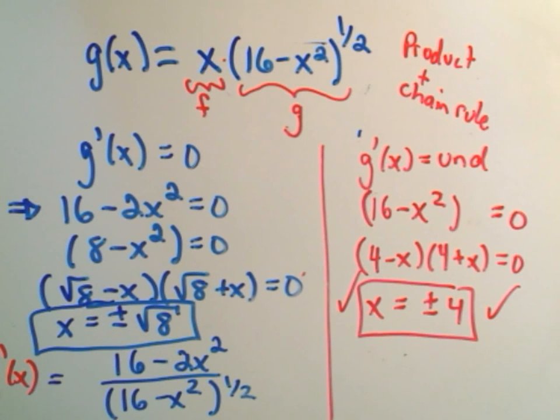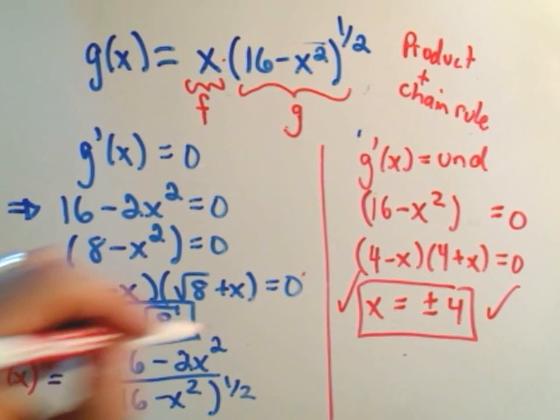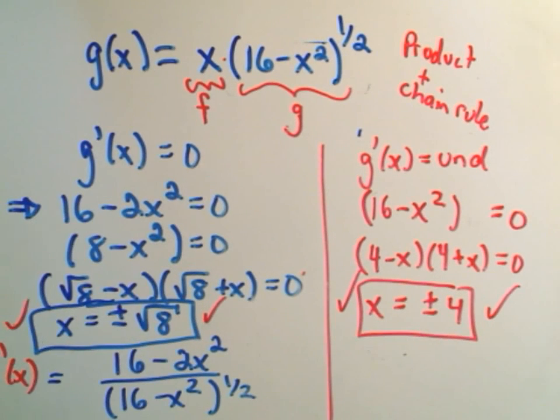Forgive my mistakes here, I'm under the weather. That's my excuse, at least. So in either case, they'll be defined. And that's it. That means all of these will be critical numbers, positive and negative square root of 8, as well as positive and negative 4.